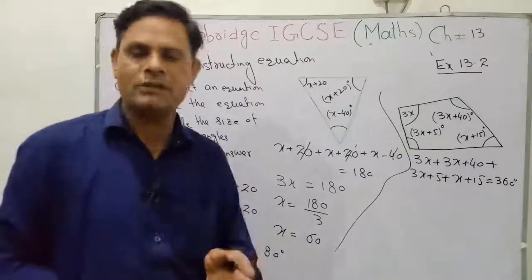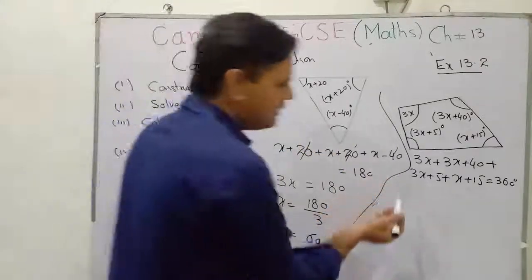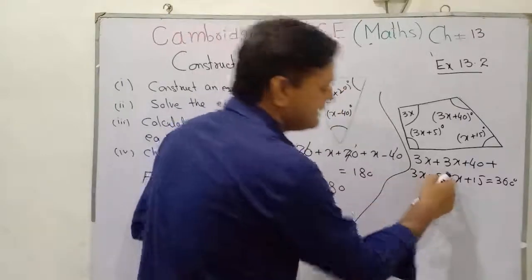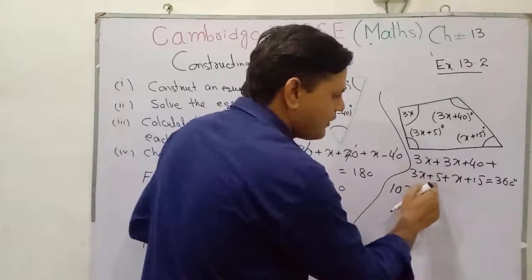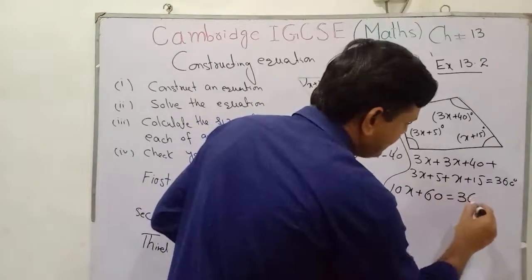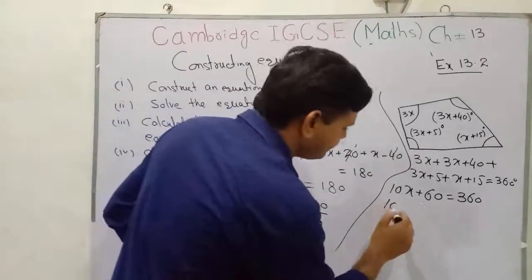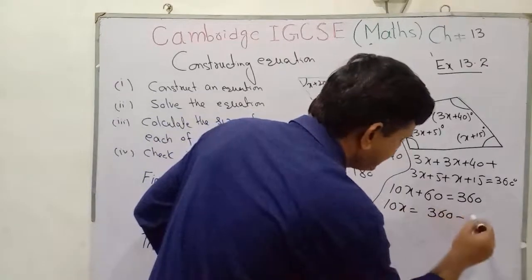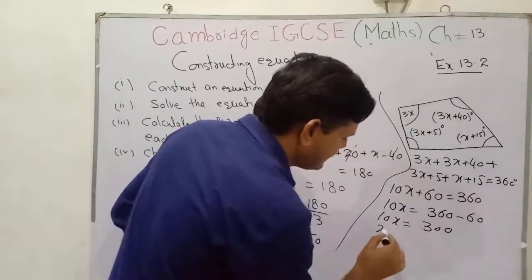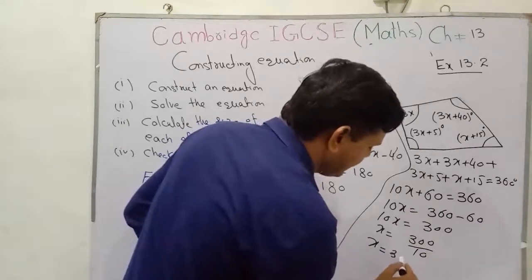If you haven't watched the first video, I suggest you watch it first so you can easily understand this. Now solving the equation: 3x + 3x = 6x, plus 3x = 9x, plus x = 10x. For constants: 40 + 5 = 45, and 45 + 15 = 60. So 10x + 60 = 360°. Then 10x = 360 − 60 = 300, so x = 300 ÷ 10 = 30.